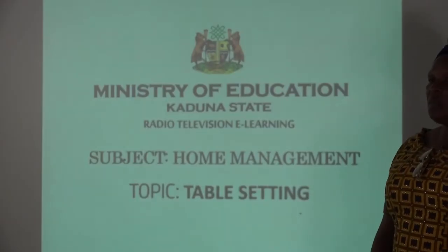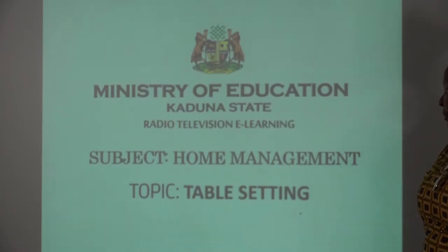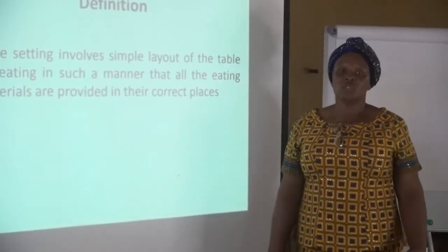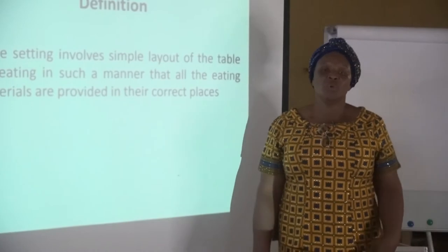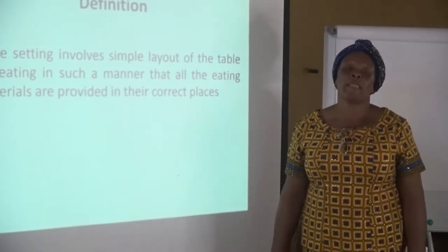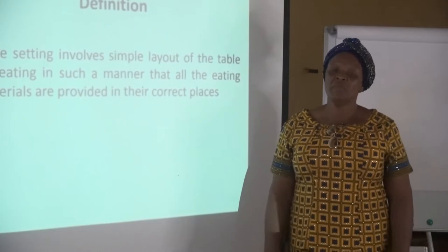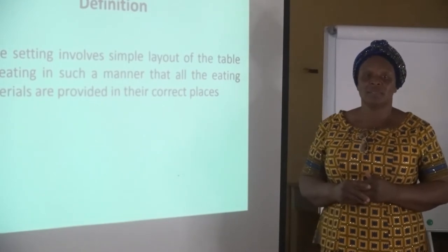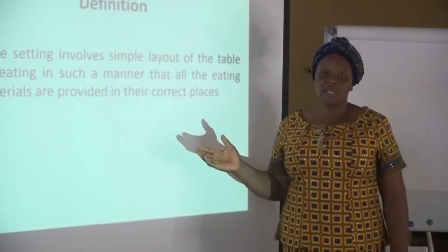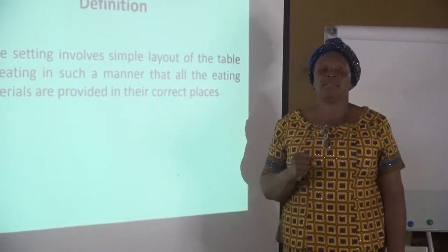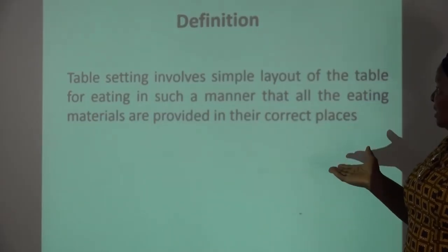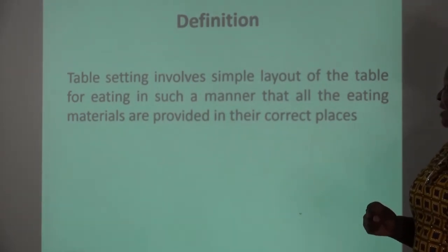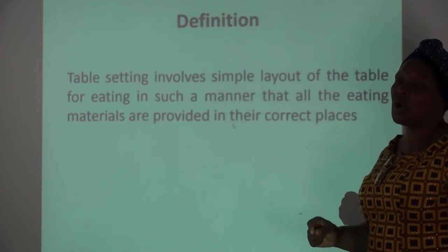Today, the topic we shall be discussing will be on table setting. At home, what we eat, we usually eat on the table. There are so many reasons why we eat meals at the table, for comfort and for relaxation. Before we go on, let's define what table setting is. Table setting involves a simple layout of the table for eating in such a manner that all the eating materials are provided in their correct places.